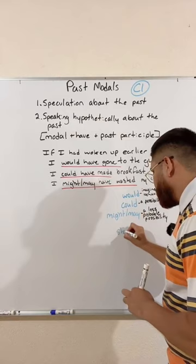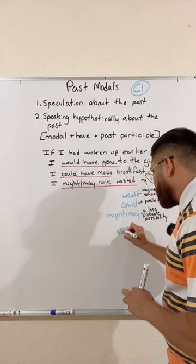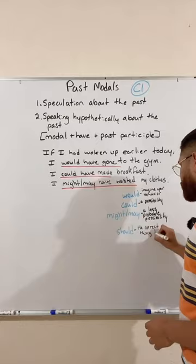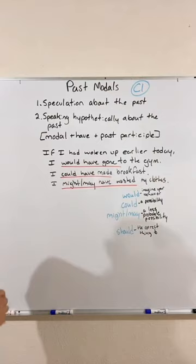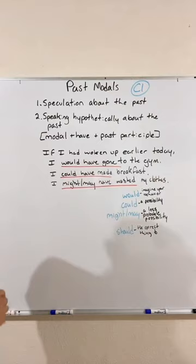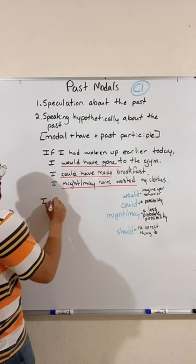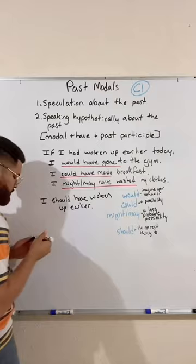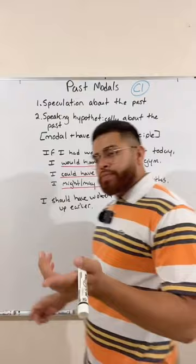And 'should' — I'll give you an example of 'should' in a minute. We use 'should' to talk about the correct thing to do. Going to the gym is important for your physical and mental health. So I could say: I should have woken up earlier — that would have been the correct thing to do. I should have woken up earlier, but I didn't. Again, all of these are to speak hypothetically about the past.